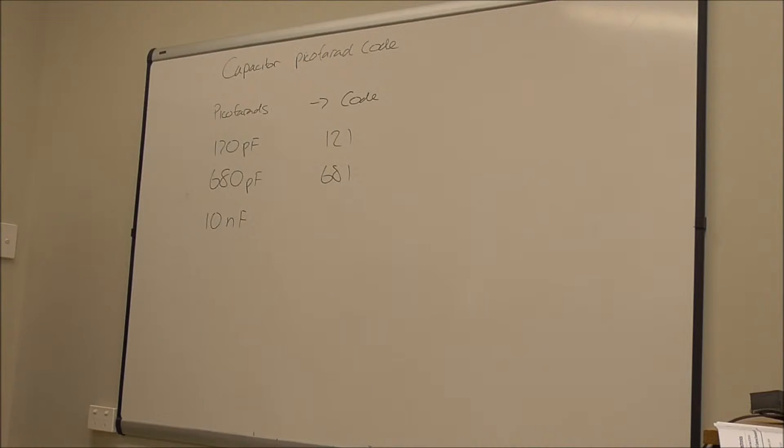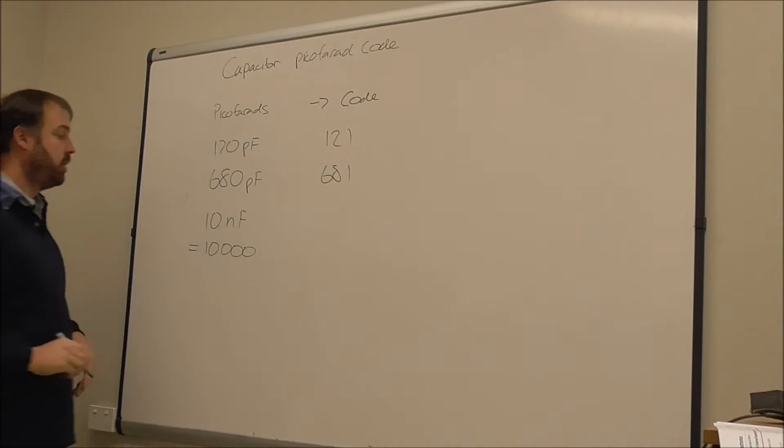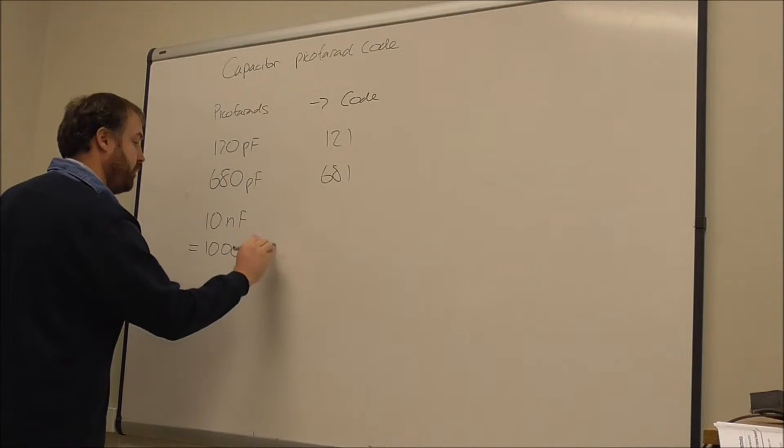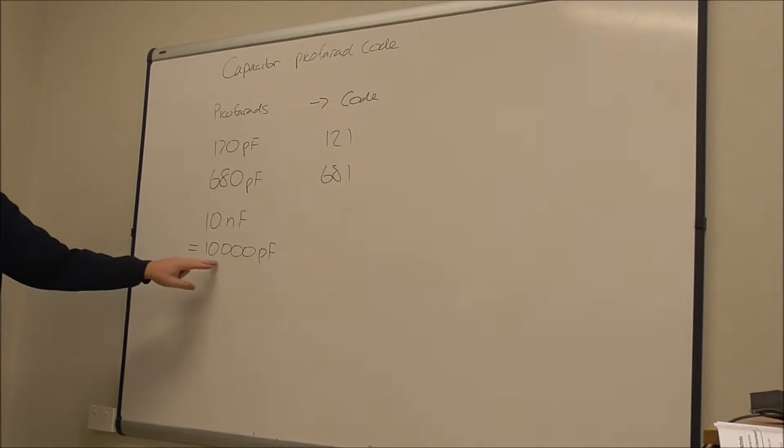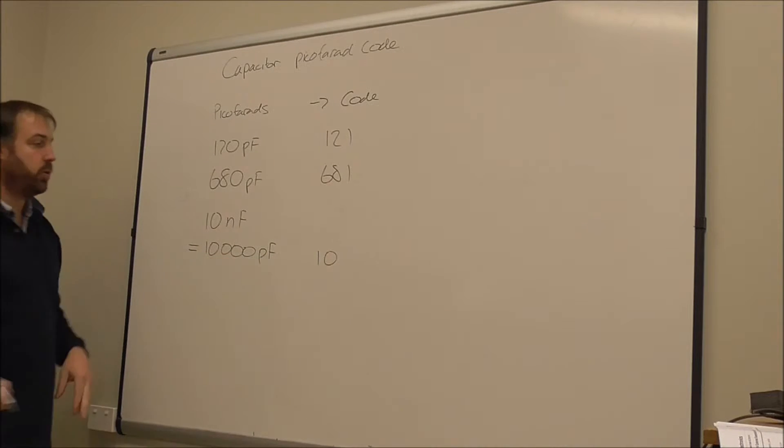One nanofarad is a thousand picofarads, so it's 10,000 picofarads. So the first two digits is one zero, and then followed by three more zeros, giving 103.